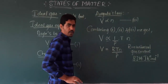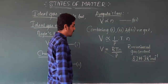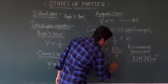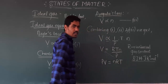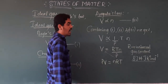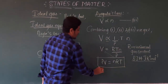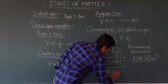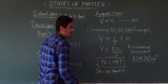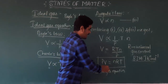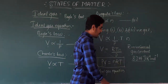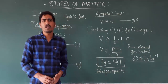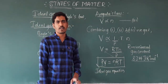Cross-multiplying P to the left-hand side, we get PV = NRT. This equation is known as the ideal gas equation, where P is pressure, V is volume, N is number of moles, T is temperature, and R is the universal gas constant. Remember this very important equation: PV = NRT.